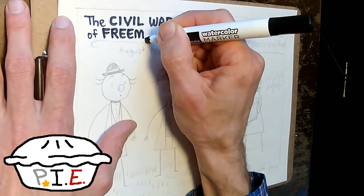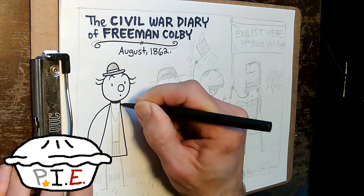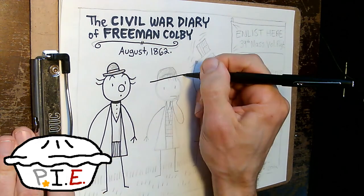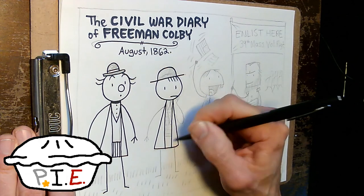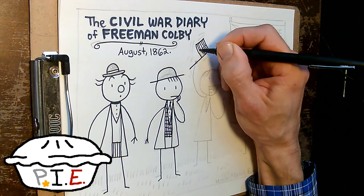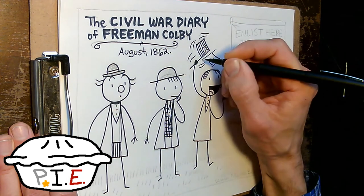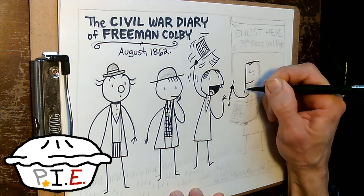And now, continuing in what I call the PIE process, PIE, pencil ink erase, I'm going to trace over all these pencil lines with a nice black pen. This is a pretty cheap felt tip flare pen. But you can see the difference it makes when you trace over your tentative pencil lines with clear black ink. It makes the whole picture a lot easier to see.